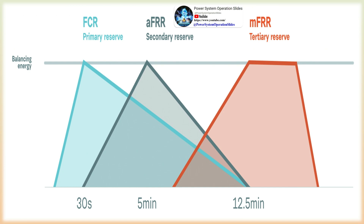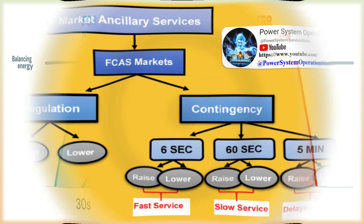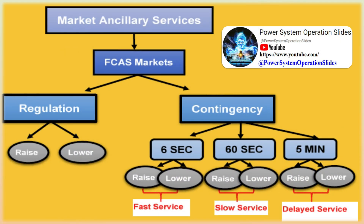Frequency containment reserve FCR, as the primary reserve, seeks to maintain equilibrium between power generation and consumption within the synchronous area, with the objective of ensuring the operational reliability of the synchronous area's power system and stabilizing the system frequency at a constant value. Primary reserve units are the quickest to respond to sudden changes in demand or supply, typically required to respond within seconds, usually less than 10 seconds. Primary reserves are designed to provide a short-term burst of power for a limited time, usually up to 15 minutes.